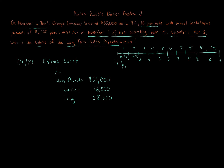But this question is asking about November 1st, Year 3. At that point, two payments have already been made — they're gone. That leaves eight additional payments remaining. Of those eight, one payment is considered current and seven are considered long-term.